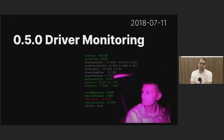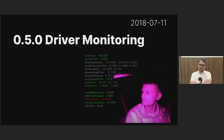In version 0.5.0 we shipped driver monitoring. As OpenPilot started getting better and better, in the first version we had a bar that took six minutes to calm down and you had to touch the wheel. Six minutes now in hindsight is a very long time. But OpenPilot messed up so often that you felt very proud if you actually hit the six-minute mark. Then as OpenPilot got better and made fewer mistakes, it became very important to make sure the driver is paying attention. You can just make the wheel touch time shorter, but at some point that becomes too annoying. So we actually look at the driver's face to see if they're looking at the road.